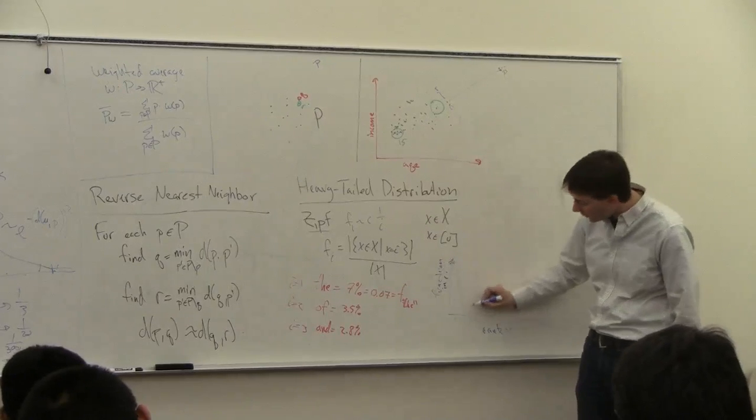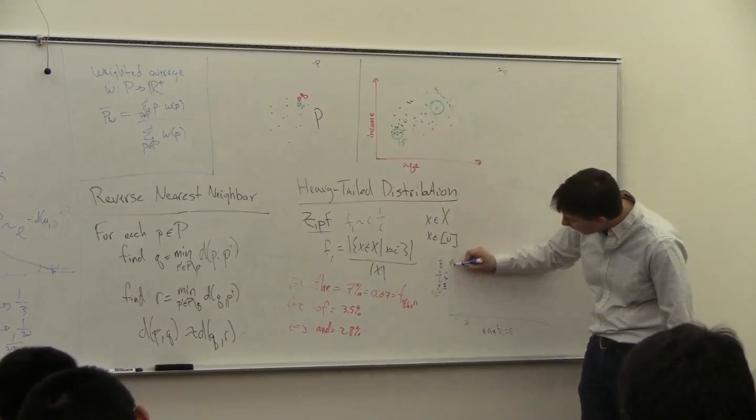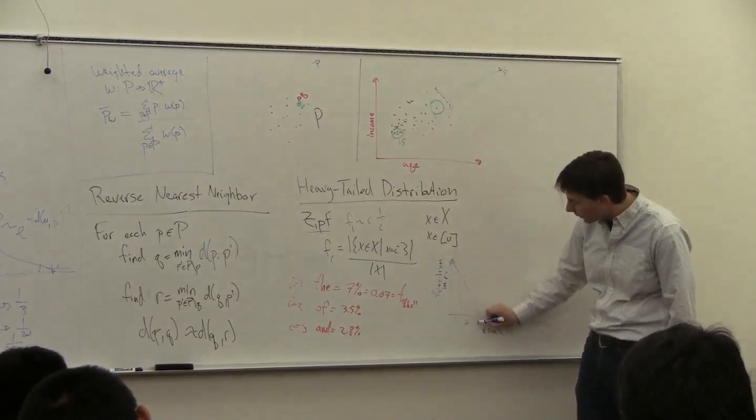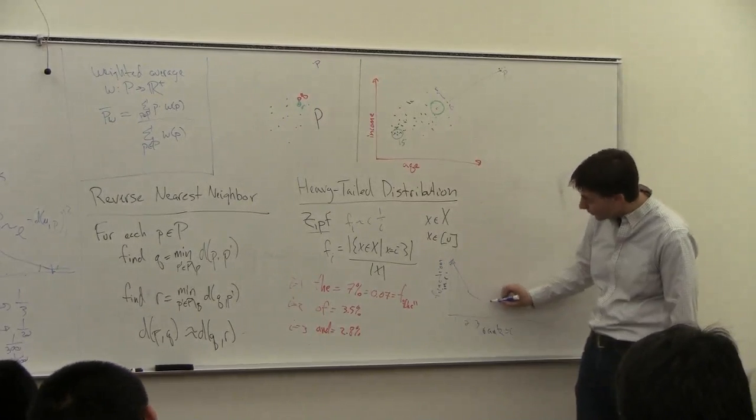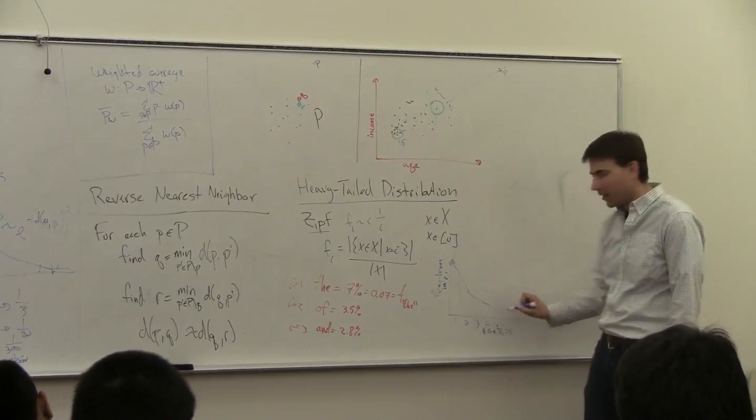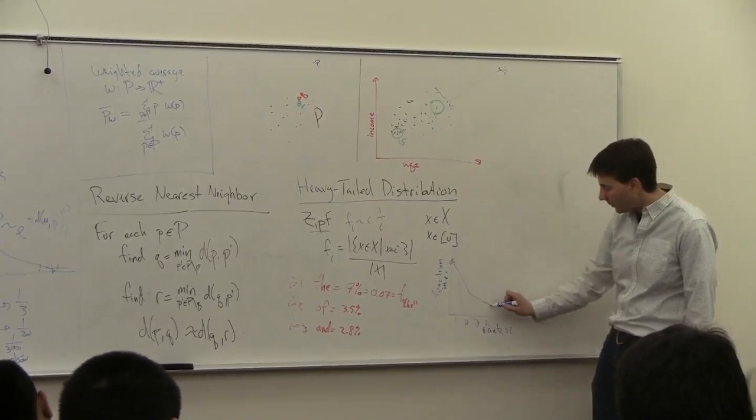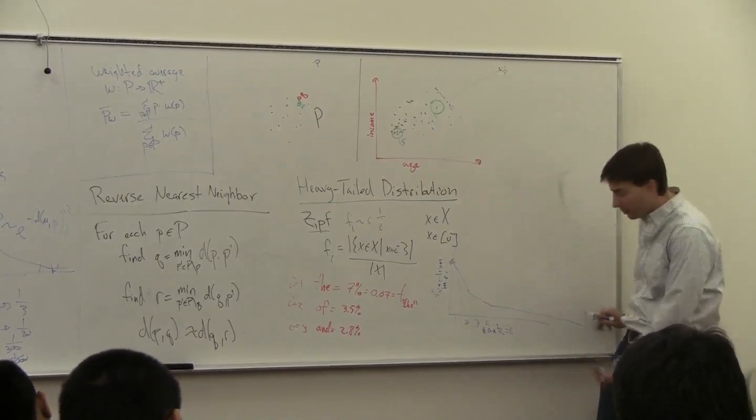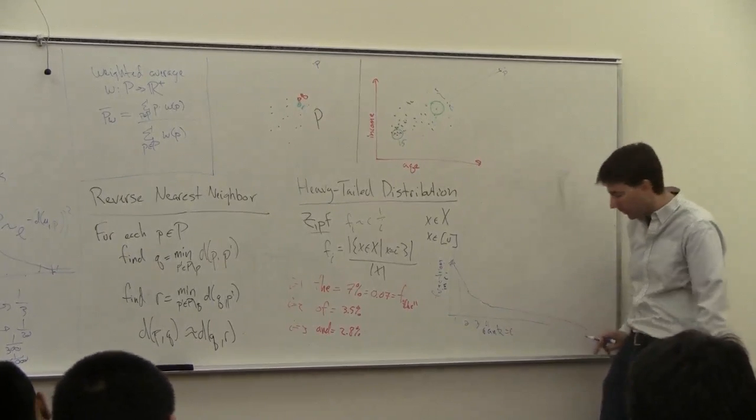But this was the fraction of words in rank i. So I started at 7%, at 2, I dropped down to 3.5%, at 3, I'm to 2.8%, but then at 4, I didn't drop down that much. And what happens is that it kind of gets really flat, but it doesn't go all the way to zero.